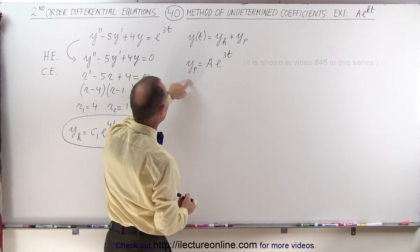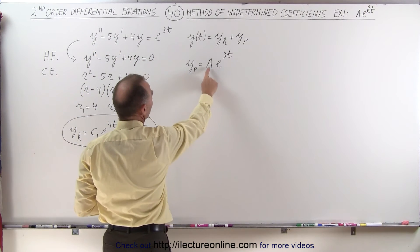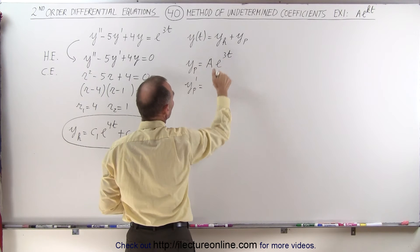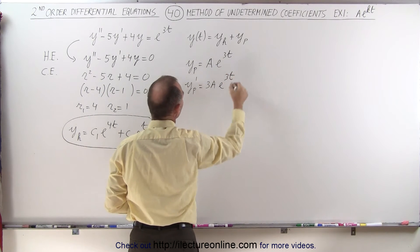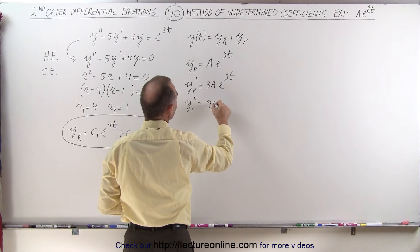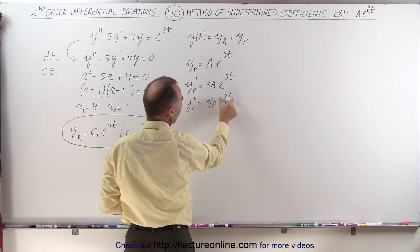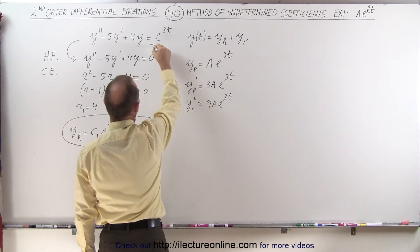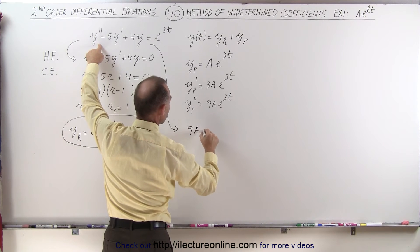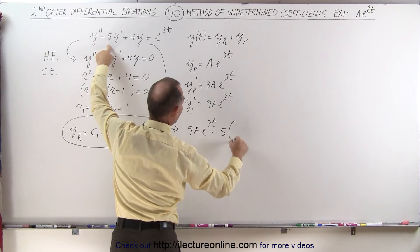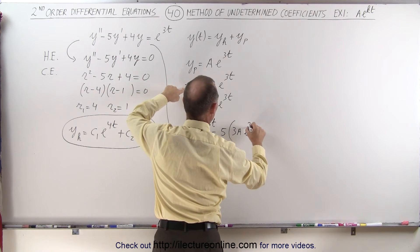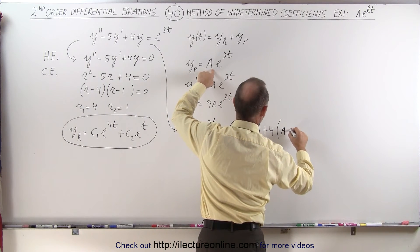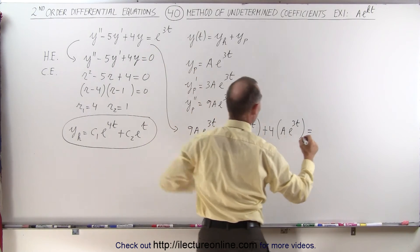We find the first and second derivatives of the particular solution to plug back into the original equation. So yp prime equals 3a*e^(3t), and yp double prime equals 9a*e^(3t). Plugging into the original equation: 9a*e^(3t) minus 5 times 3a*e^(3t) plus 4a*e^(3t) equals e^(3t).